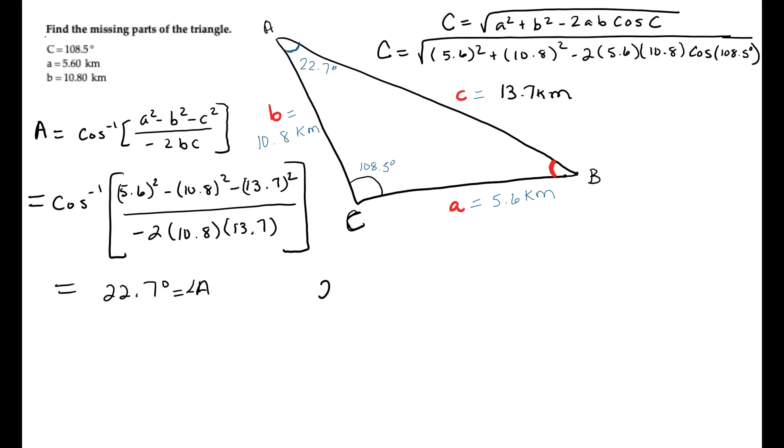So let's see here. We could add 22.7 to 108.5, and we get something like 131.2. And so then we can say, okay, well, what's 180 minus 131.2?